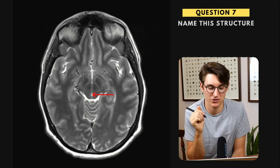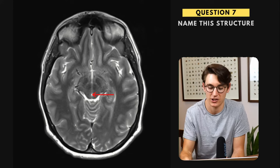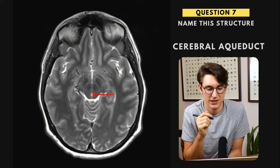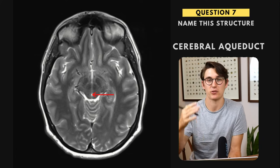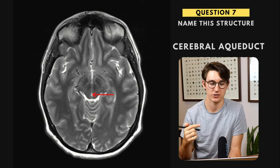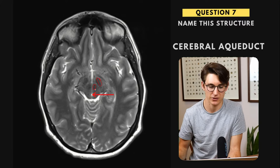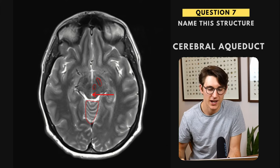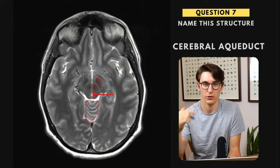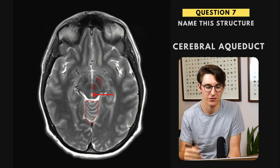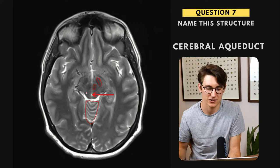Question seven, let's label this structure. We can see it's a bright circular structure. You may be tempted to say it's a vessel, but this is in fact the cerebral aqueduct, part of our ventricular system, linking our third and fourth ventricles. We can again see we're at the level of the midbrain. We can still see the substantia nigra and some of the red nucleus, as well as just the tiny superior portion of our cerebellum. This is a classic T2-weighted scan — bright CSF, dark white matter, light gray matter — and there's our cerebral aqueduct.